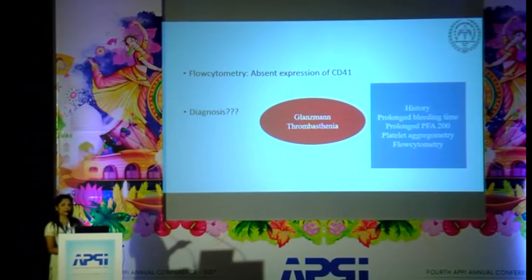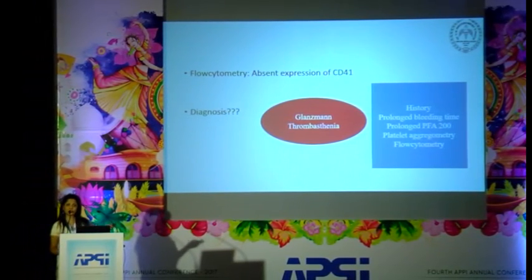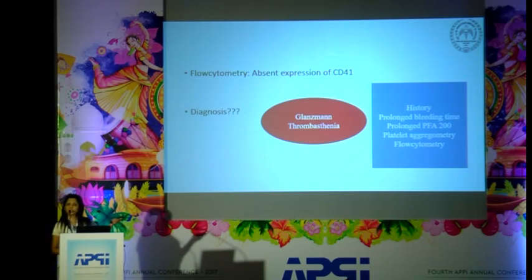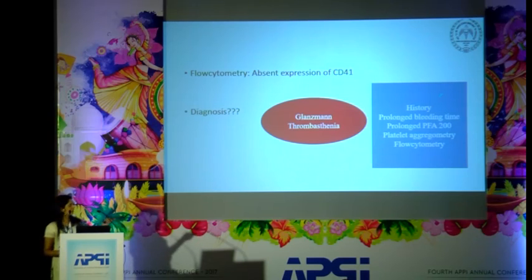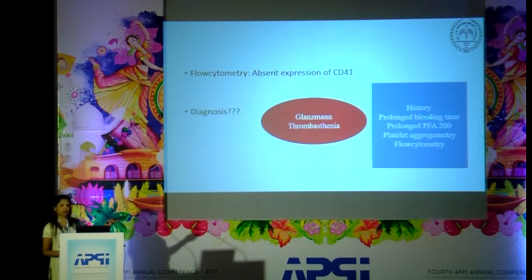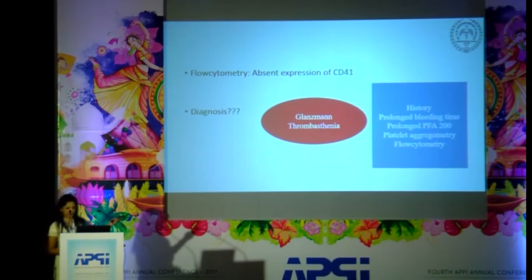So what are the platforms which helped in making that diagnosis? First and foremost is history — you need a detailed clinical history to differentiate a bleeder versus a non-bleeder. The other things that helped: prolonged bleeding time, prolonged PFA-200, abnormal platelet aggregometry, and flow cytometry showing absent expression.